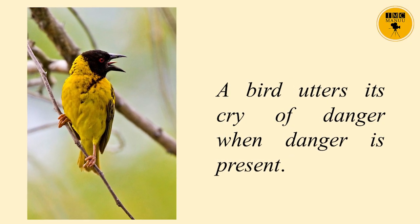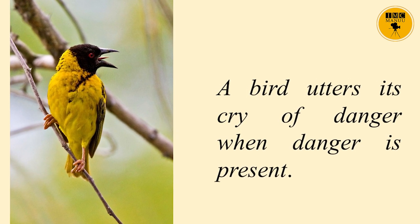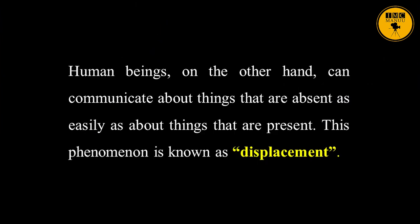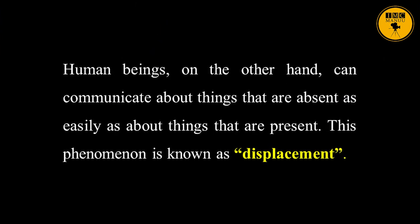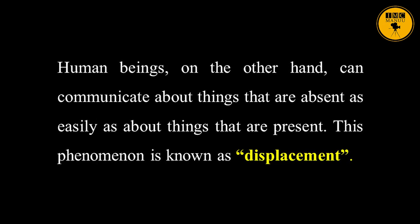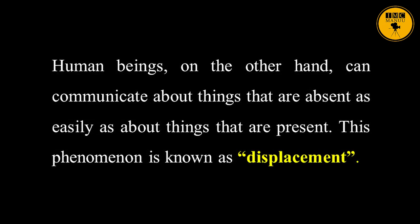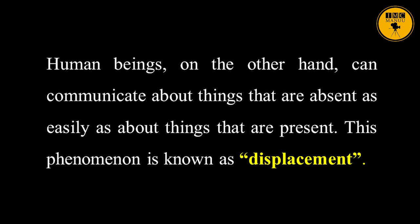Another important feature that differentiates animal communication from human language is displacement. Most animals can communicate about things in the immediate environment only. A bird utters its cry of danger when danger is present — it cannot give information about a danger which is removed in time and place. Human beings, on the other hand, can communicate about things that are absent as easily as things that are present. This phenomenon is known as displacement.